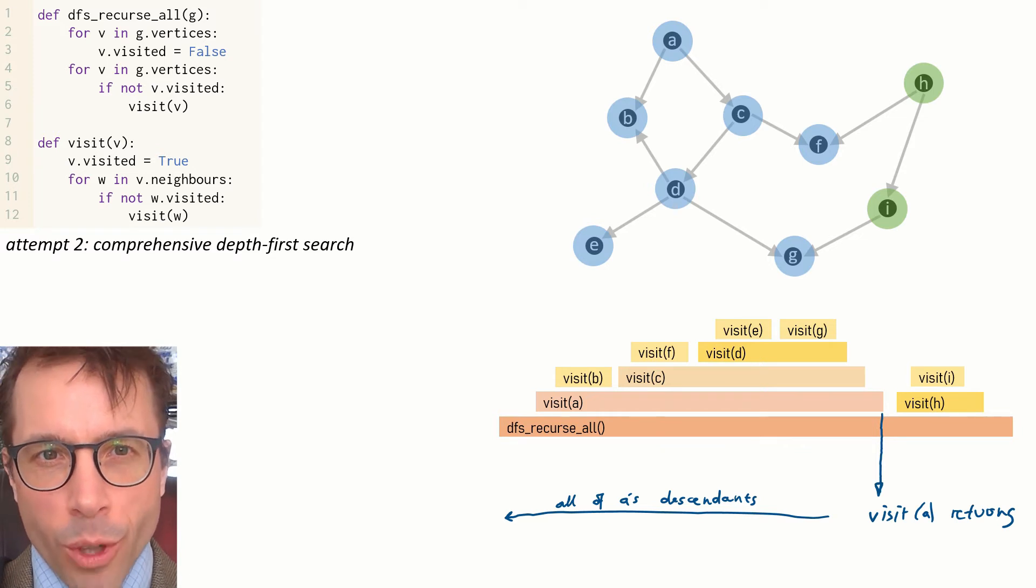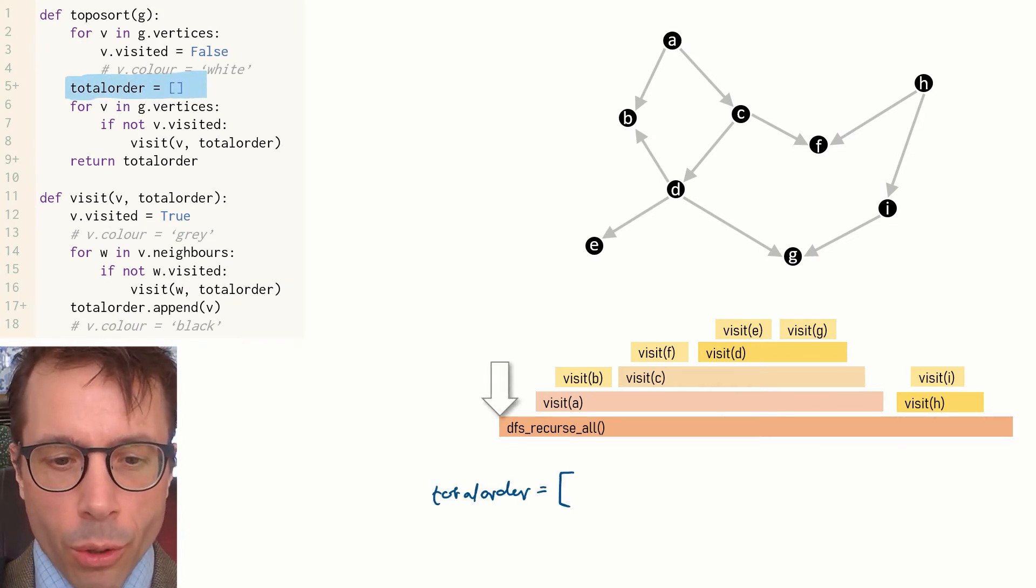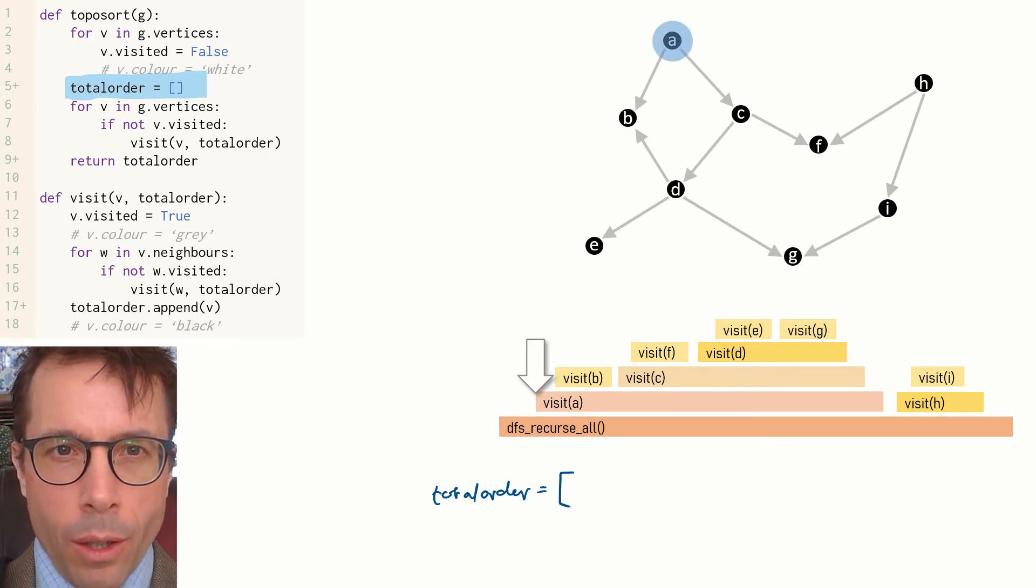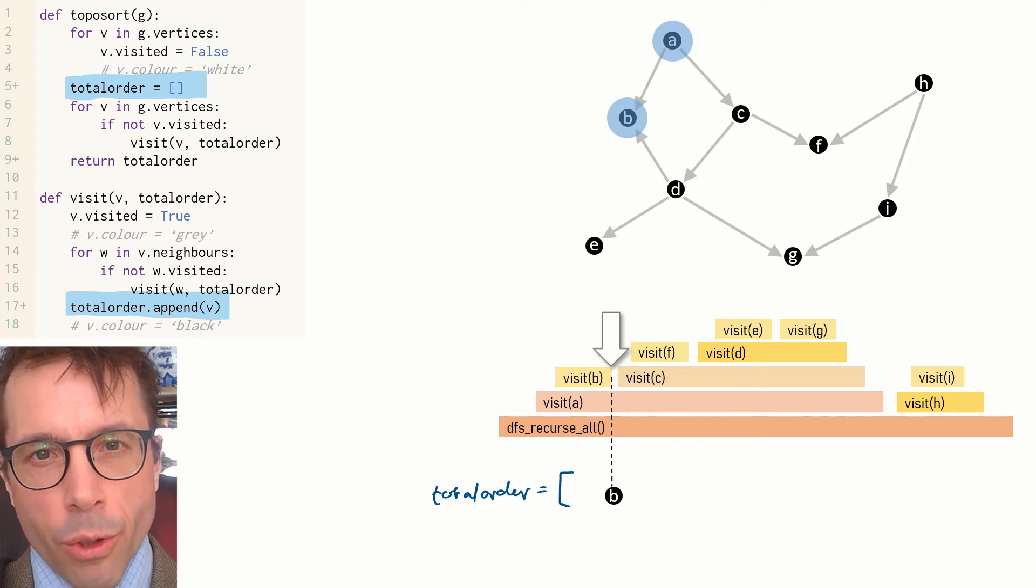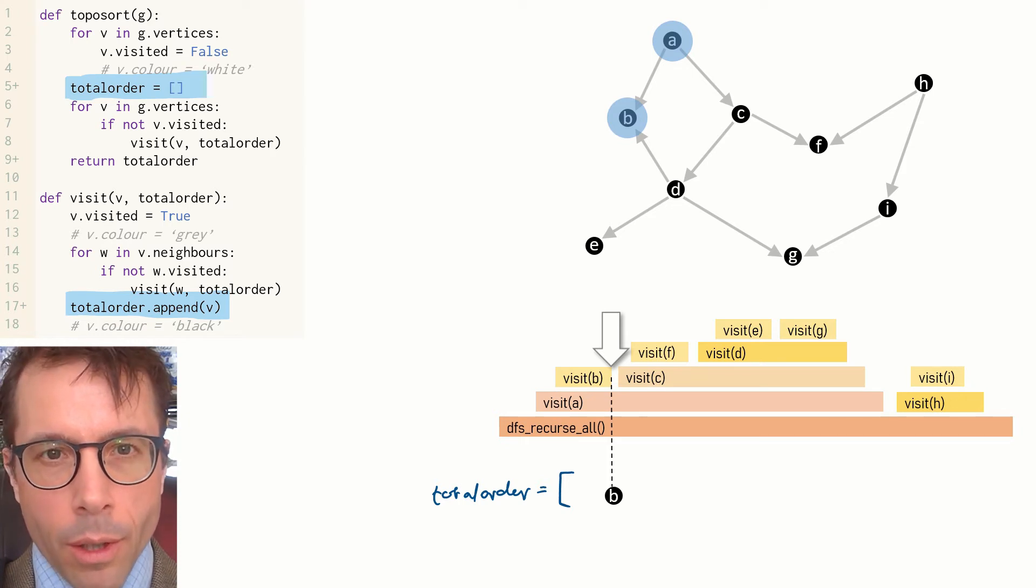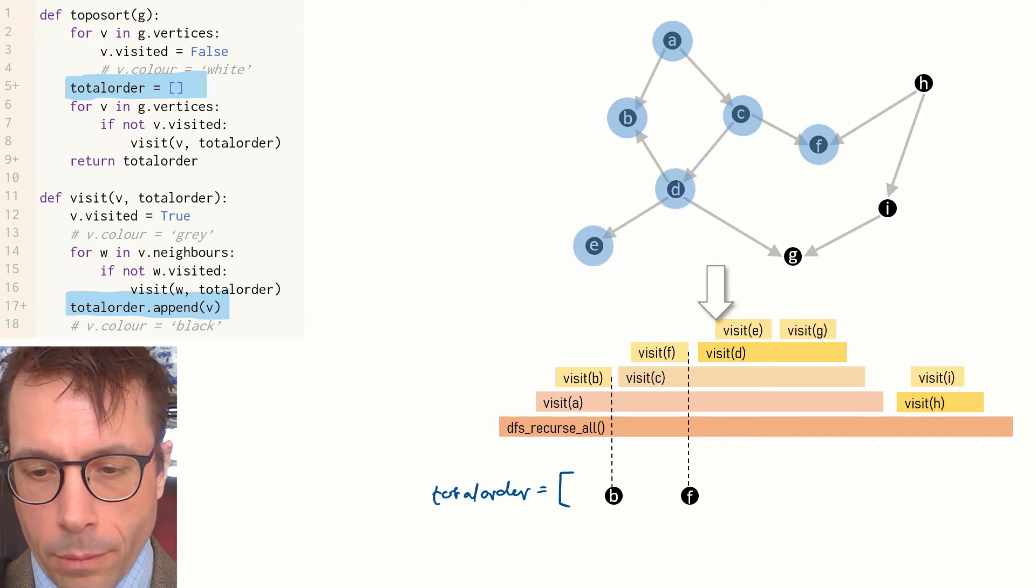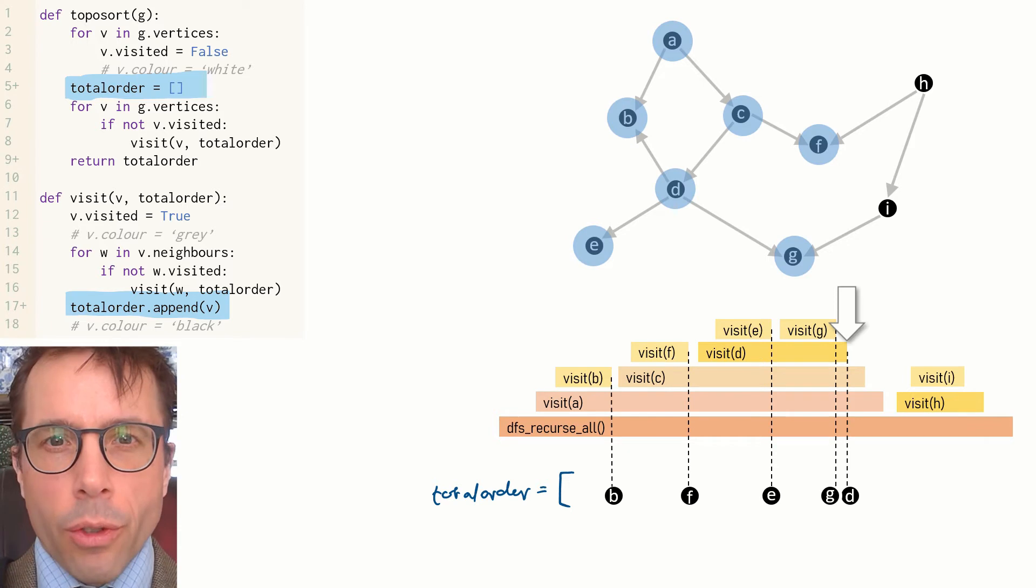Let's walk through the code once more. First we'll declare a list total_order, initially empty. We call visit A, which calls visit B. B has no neighbors, so visit B just returns without calling anything else. But before it returns, it appends B to our total_order list, and so on.